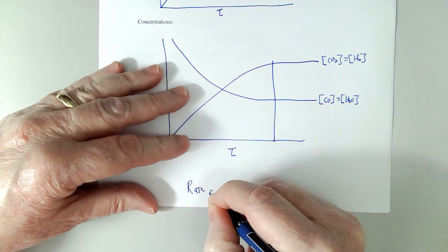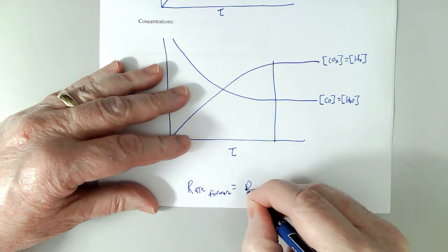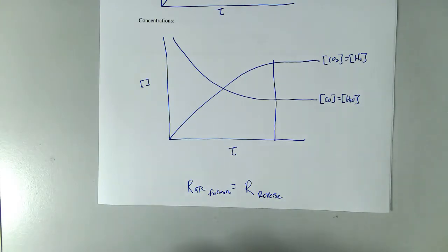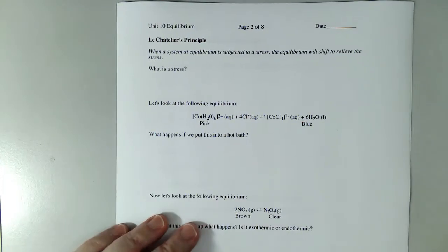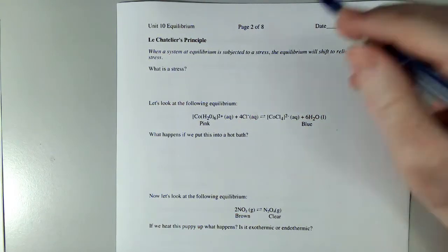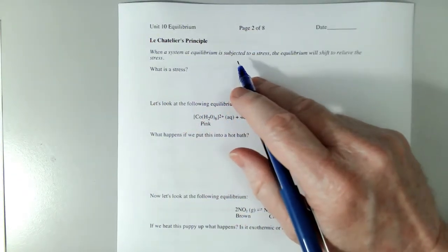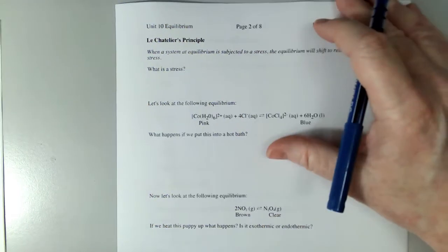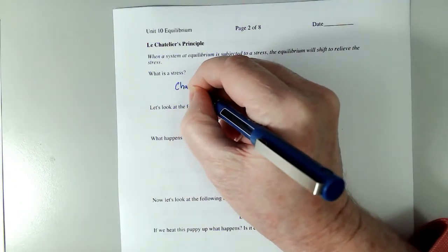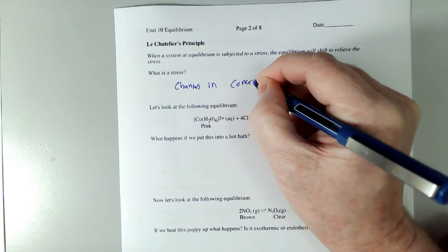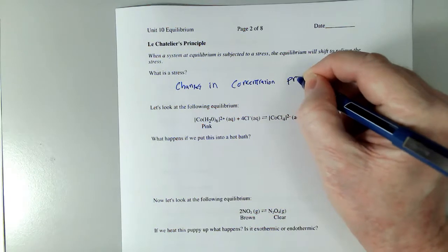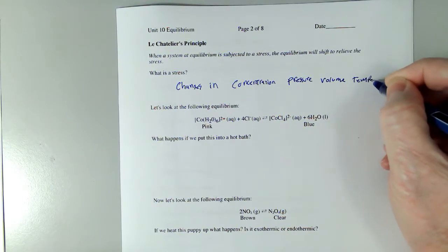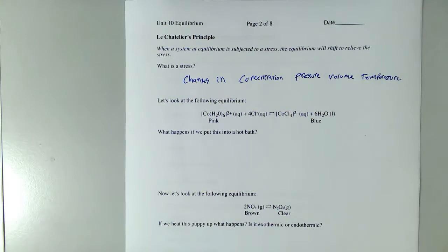So, that's our basic definition for equilibrium. The rate of the forward reaction will be equal to the rate of the reverse reaction. All right, now, we're going to go on to talk about Le Chatelier's principle. When a system at equilibrium is subjected to a stress, the equilibrium will shift to relieve the stress. So, what are stresses? These will be things like changes in concentration, pressure, volume, temperature, et cetera. Those things can affect the position of an equilibrium.